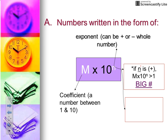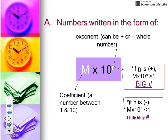If the value of your exponent n is positive, that indicates the quantity m times 10 to the nth power is a number greater than 1 — we're going to call that a really big number. So if your exponent is positive, when the number is written in its common or standard form it's a really big number. If the value of n is negative, that means the number m times 10 to the nth power is less than 1 in its standard form — we're going to call those little bitty numbers.